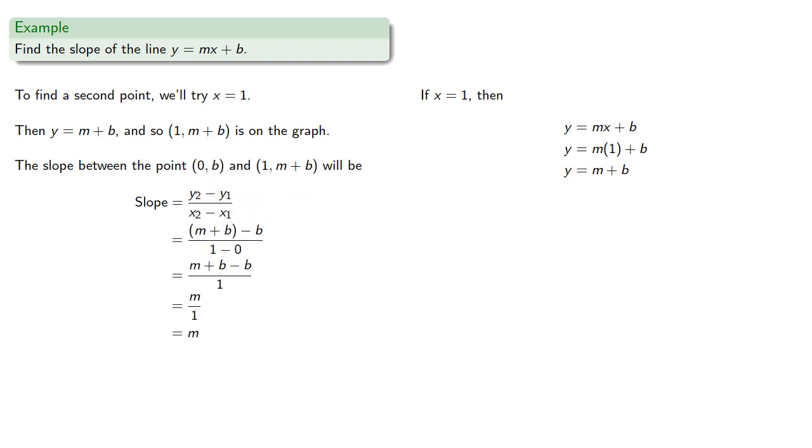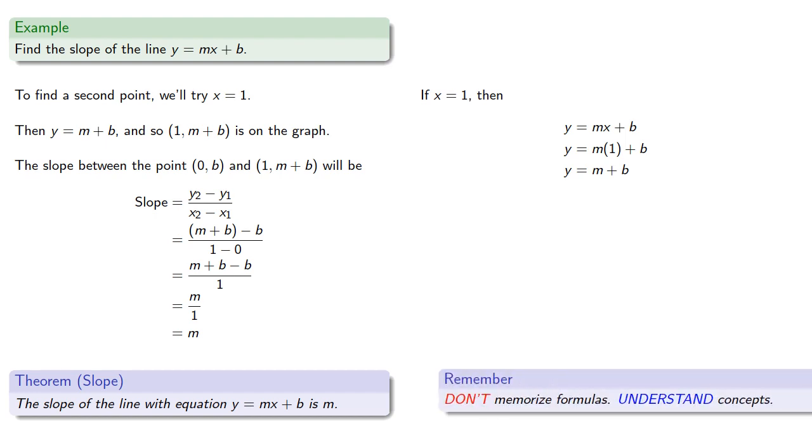Which gives us another important result, the slope of the line with equation y equals mx plus b is m. And again, don't memorize formulas, understand concepts. We got this slope by finding two points on the graph, and calculating the slope between them.